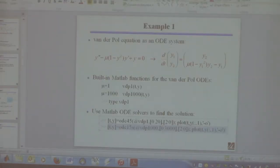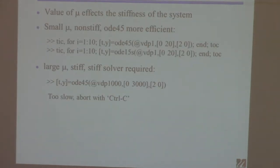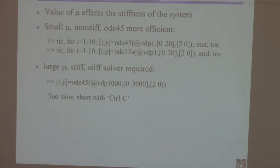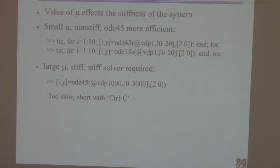This parameter mu affects something called the stiffness of the system. Stiffness basically means the problem has a wide separation of time scales — some things are really fast and some are really slow. If a problem has fast dynamics and slow dynamics, you might have one eigenvalue that's 0.1 and another that's 1000 — a huge separation in time scale. That kind of problem is called stiff. That's why there's a lot of difference between mu = 1 and mu = 1000.